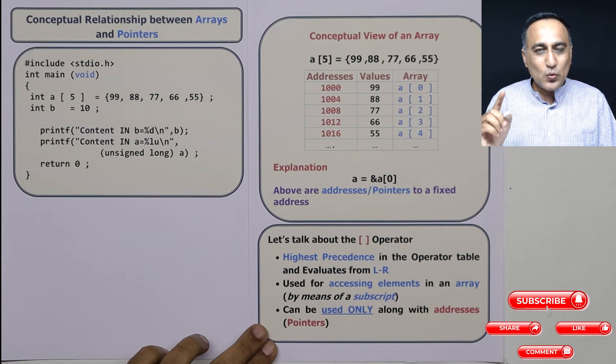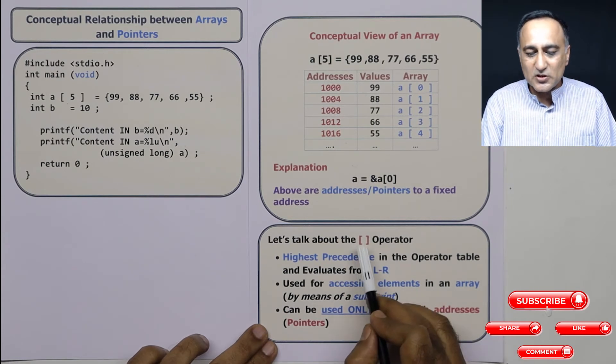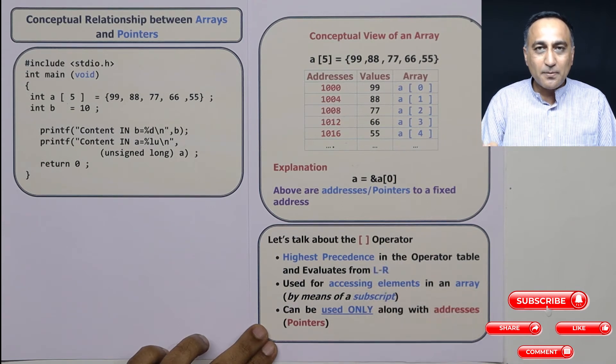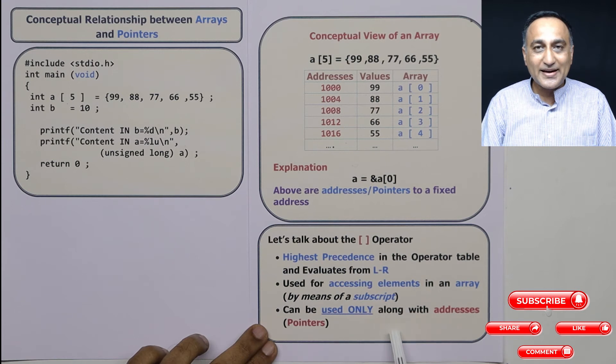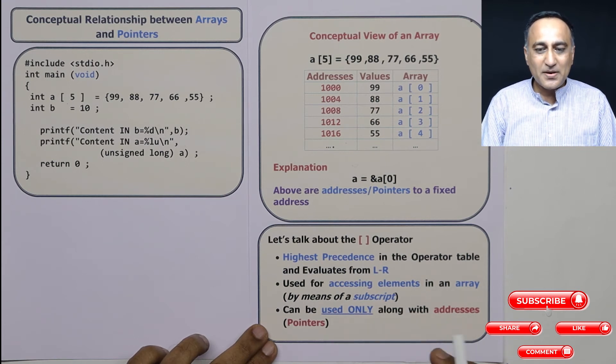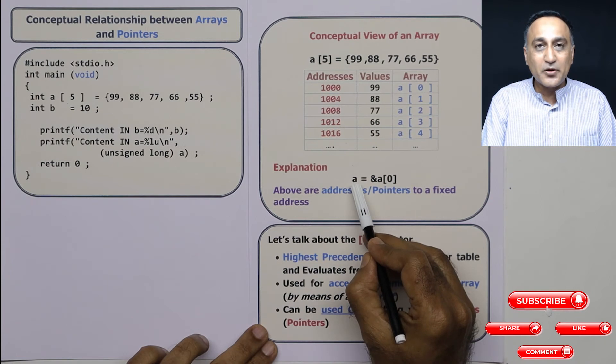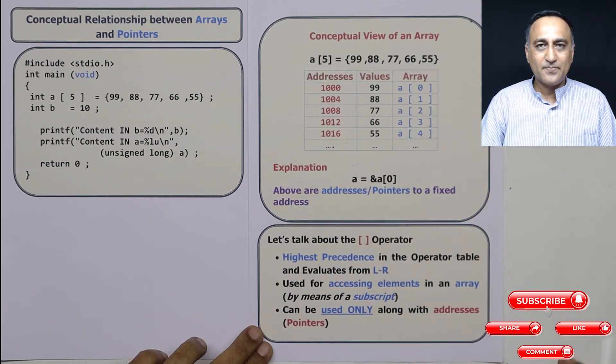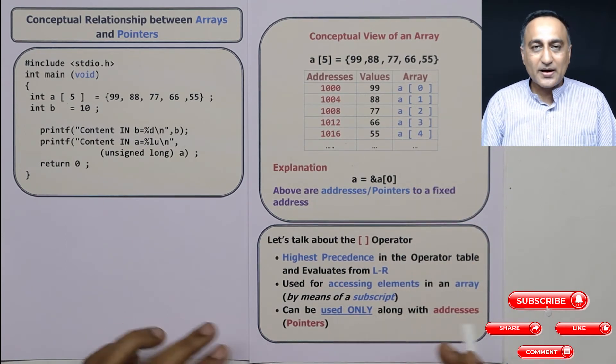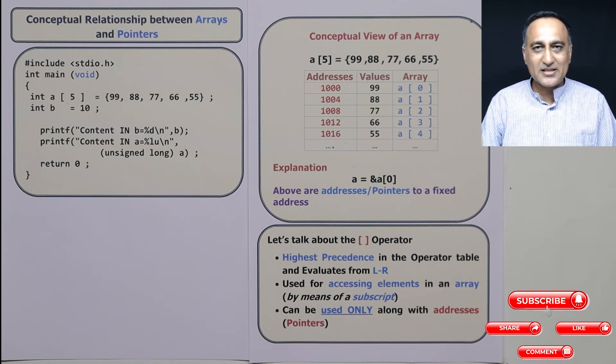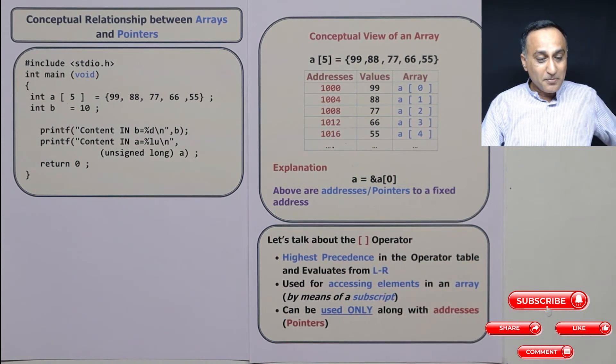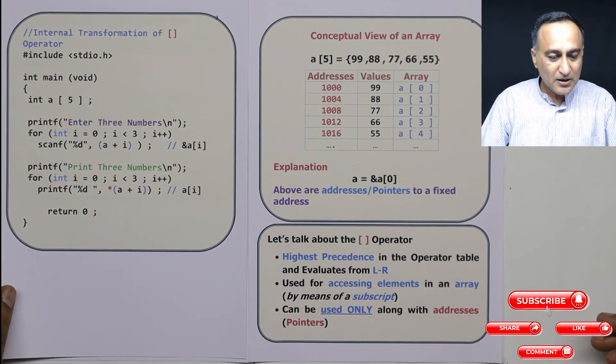Now, there is one rule which is fixed with this square bracket operator. It says that the square bracket operator must only be used with pointers or address type of data. Now it makes sense since A is a pointer or address. So that's why I am using this square bracket with this particular A. I will just repeat, this square bracket is only used with pointers or address type of variables or constants. So that's why I am using it with A. Now there is a deeper meaning with it. We will discuss as we move around.